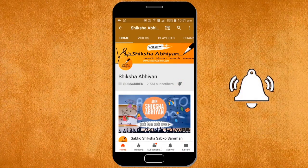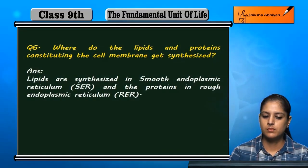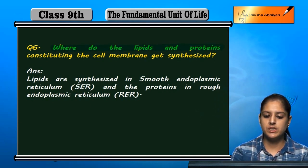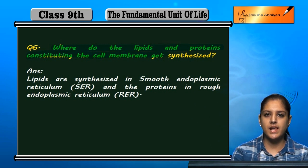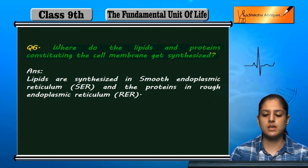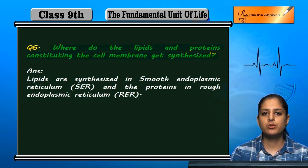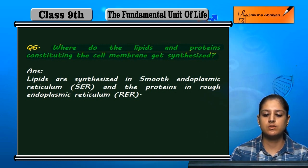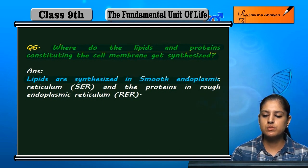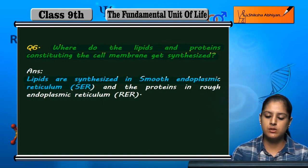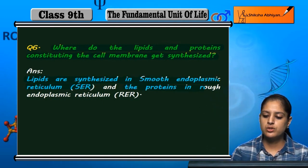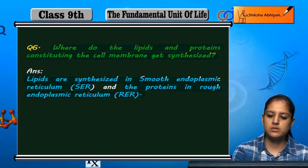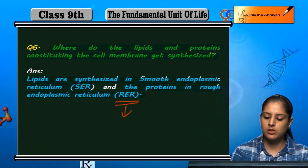Question 6: Where do the lipids and proteins constituting the cell membrane get synthesized? Lipids of the cell membrane are synthesized in the smooth endoplasmic reticulum, and proteins are synthesized in the rough endoplasmic reticulum.